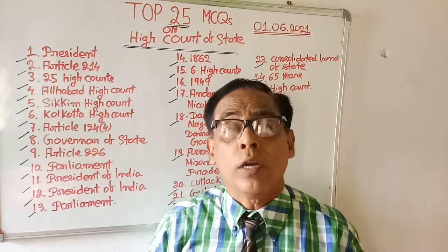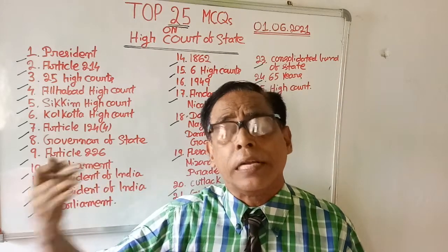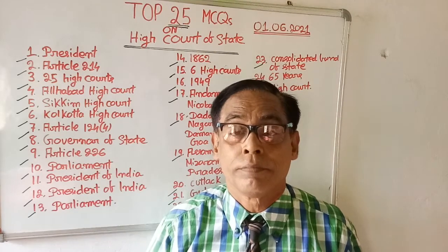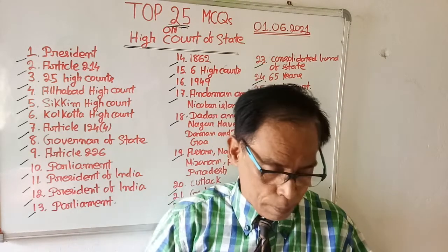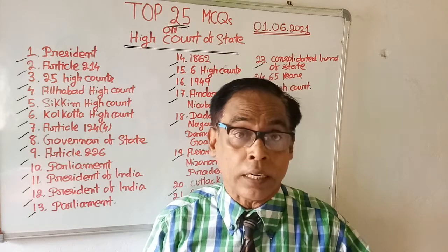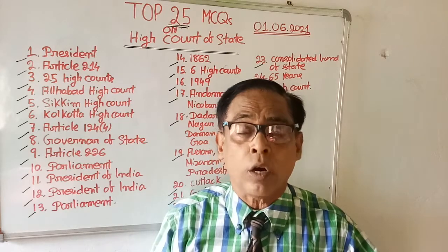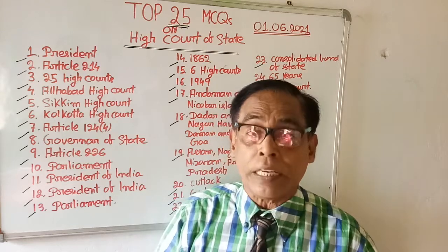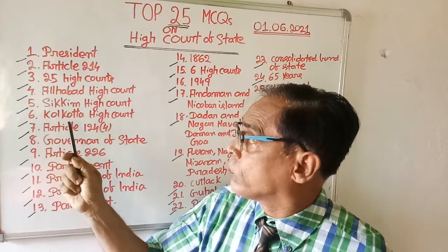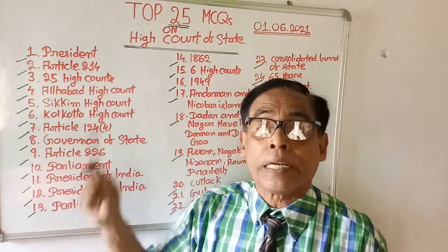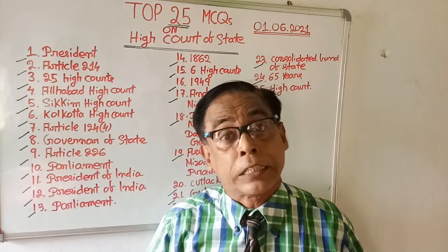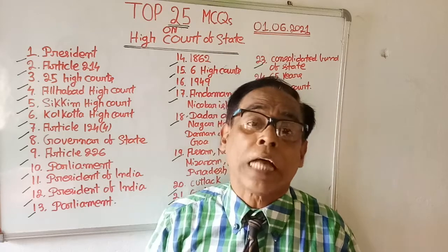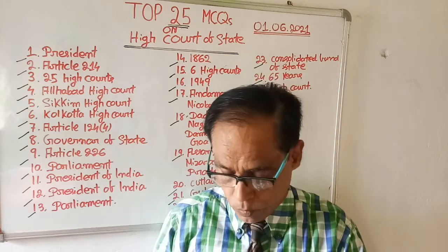Question number six: which is the oldest High Court in India? Options are: Allahabad High Court, Karnataka High Court, Kerala High Court, and Kolkata High Court. The right answer is Kolkata High Court — it came into existence in 1862 and is the oldest High Court in our country.